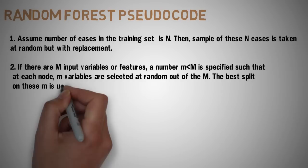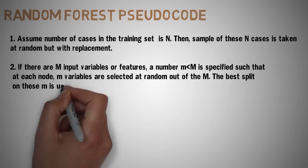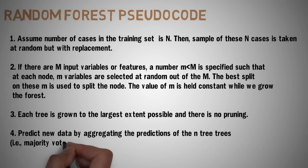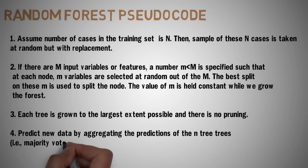If there are m input variables or features, a number of m smaller than M is specified such that each node m variables are selected at random out of the M. The best split on these m input variables is used to split the node. The value of m is held constant while we grow the forest. Each tree is grown to the largest extent possible and there is no pruning.